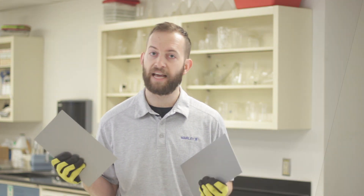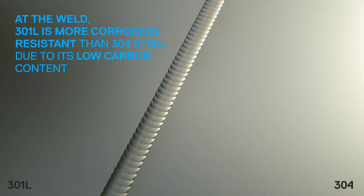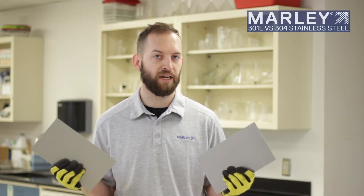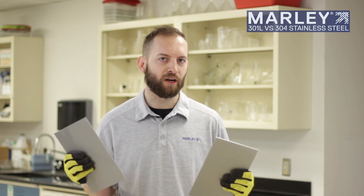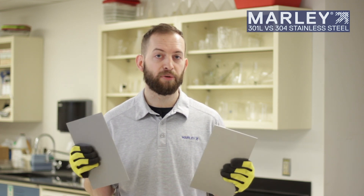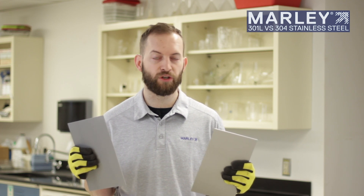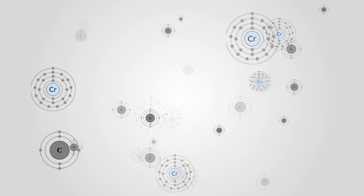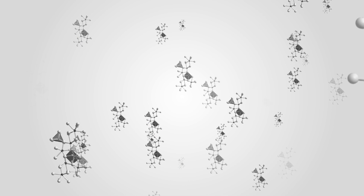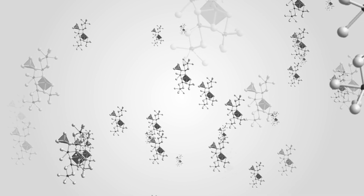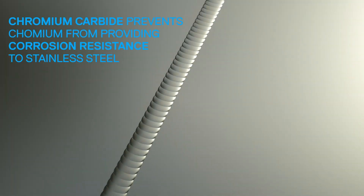When we talk about corrosion resistance at the weld, 301L is actually more corrosion resistant than 304. This is all because of the L portion of 301L — the low carbon grade. During the welding process, when stainless steel is heated up between 1650 and 800 degrees Fahrenheit, a phenomenon occurs called sensitization. Chromium and carbon atoms form a completely new molecule called a chromium carbide. Chromium carbide precipitation actually prevents chromium from performing its primary function, which is providing corrosion resistance to stainless steel.